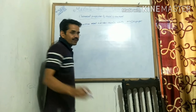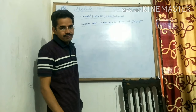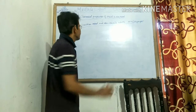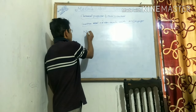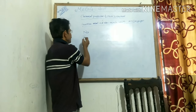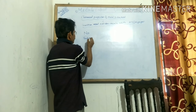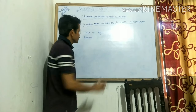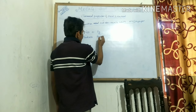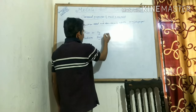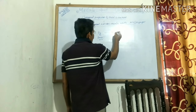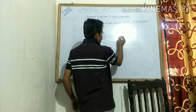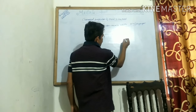Let us see how metals interact with air. For example, take sodium or magnesium. When sodium reacts with oxygen from air, it will combine to form a compound known as sodium oxide (Na₂O).